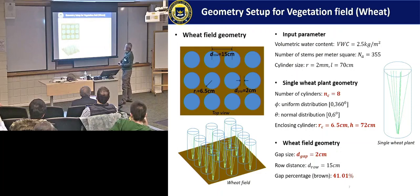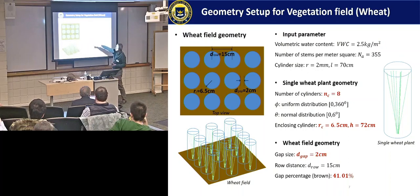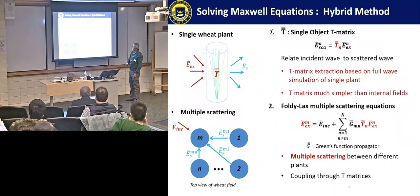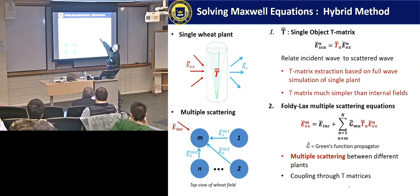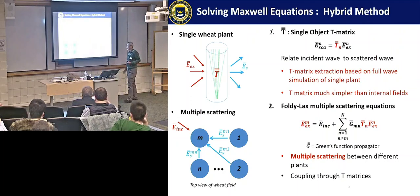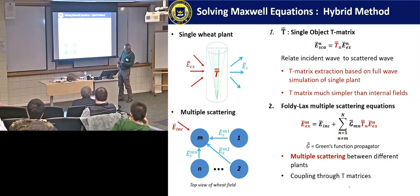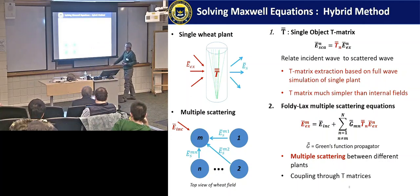What we do is set up a wheat field problem, and then my student calculates the multiple scattering for all these weeds, setting up the geometry. The approach is that you first look at a single wheat plant, solve Maxwell's equation using HFSS or similar software, and find a T-matrix. The T-matrix is much simpler than the internal fields. If you look at the internal fields of these objects, they are very complicated. The T-matrix is not as complicated. Then you look at the coupling — the multiple scattering of all these objects using the T-matrix — known as the Foldy-Lax multiple scattering equations.